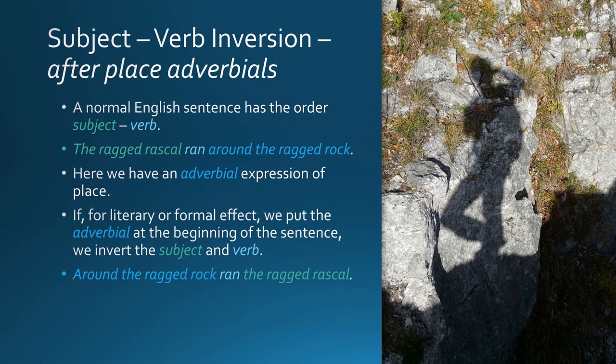Subject-verb inversion after place adverbials. A normal English sentence has the order subject-verb: 'The ragged rascal ran around the ragged rock.' Here we have an adverbial expression of place. If, for literary or formal effect, we put the adverbial at the beginning of the sentence, we invert the subject and verb: 'Around the ragged rock ran the ragged rascal.'